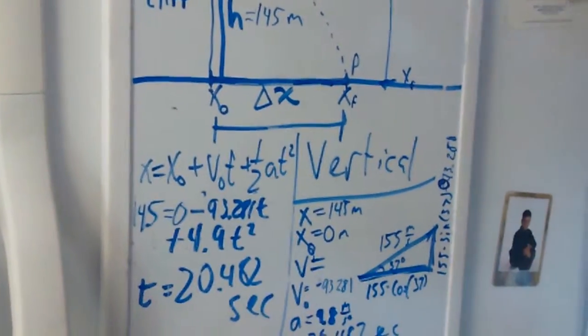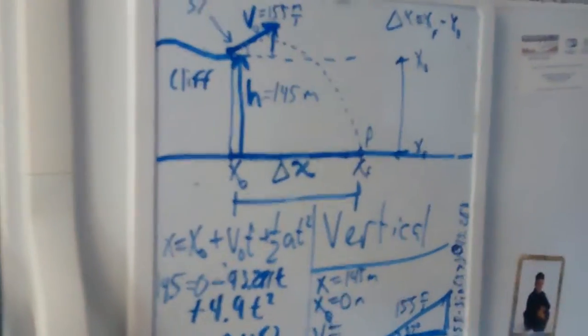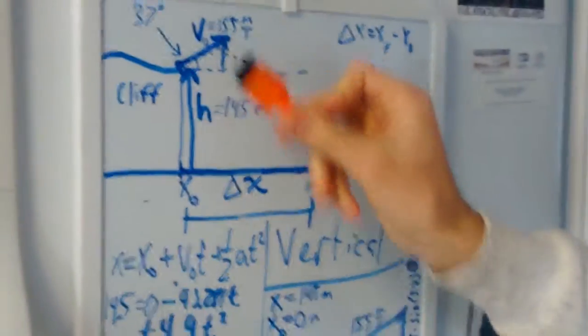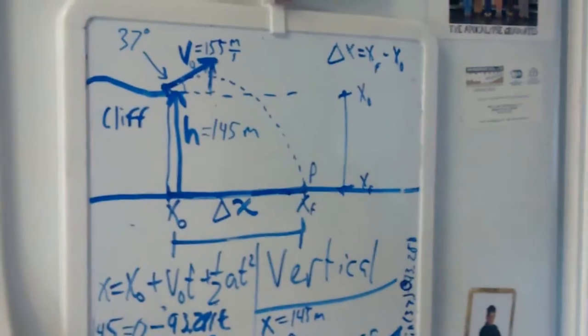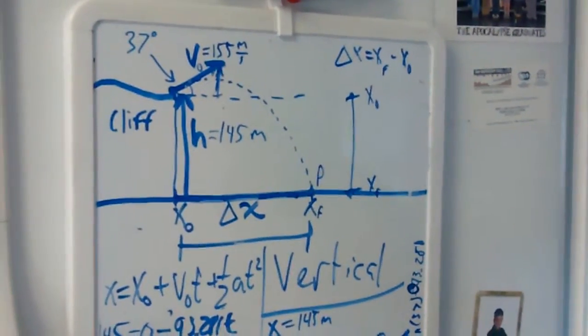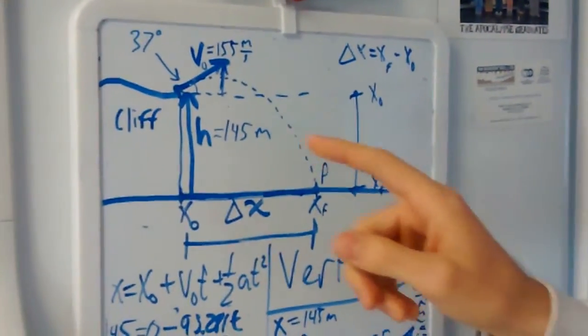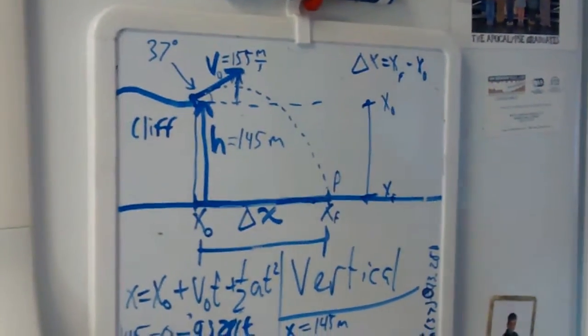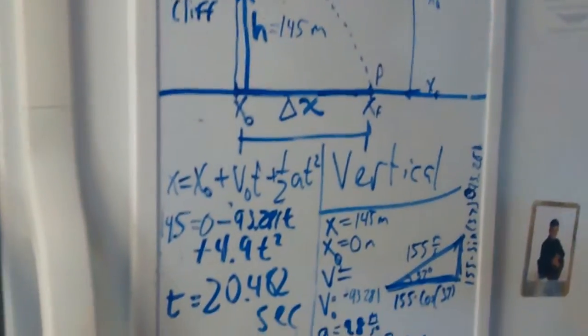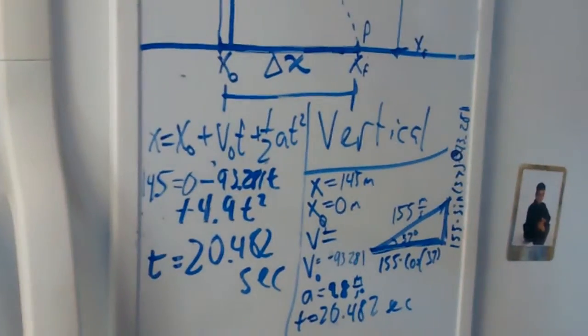We had a problem where there was a projectile being launched off a cliff that is 145 meters high, and we figured out the time for the projectile to land on the ground. And that time right here was 20.482 seconds.